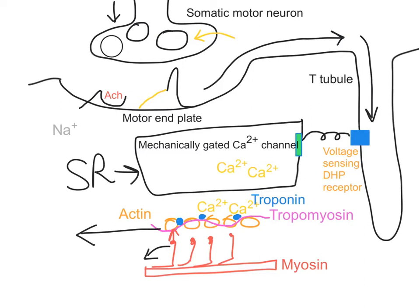What happens next is that the ATP binds and the myosin head will detach. You must appreciate that there are two things going on here that are triggering this whole procedure, and one is the binding of the ACh with the receptor. It will continue to stimulate the motor end plate as long as that ACh is there, so we have to enzymatically degrade that ACh using acetylcholinesterase.